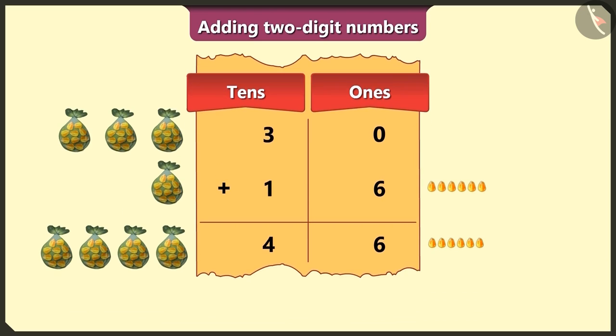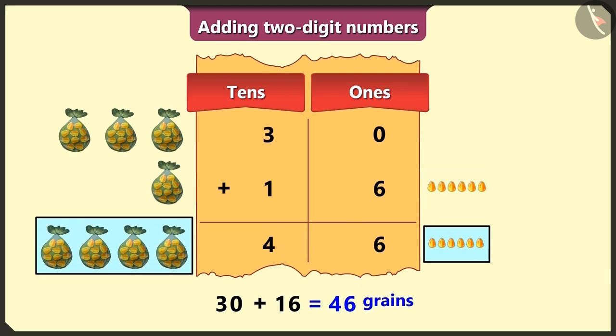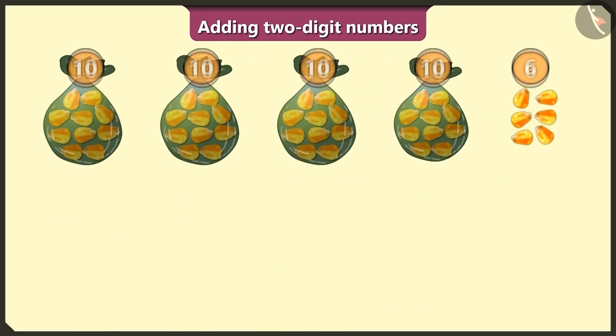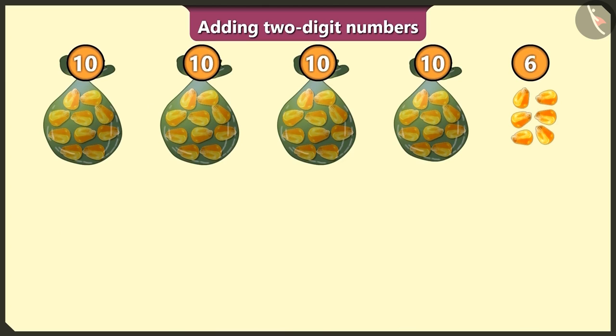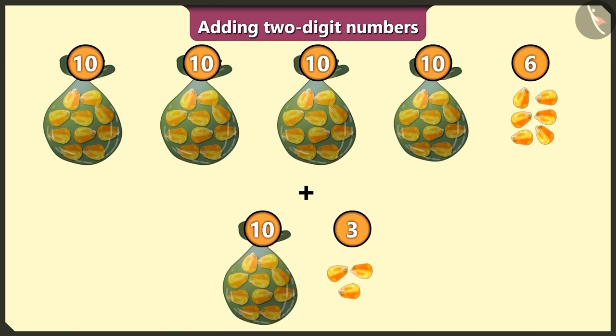Yes, here there are 3 tens or 30. And if we add 1 ten and 6, that is 16, we get a total of 46 grains. Well done, Pilu. So come on. Now, to these 46 grains, I add 13 more.